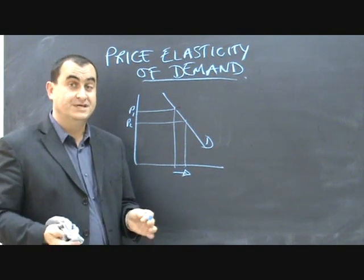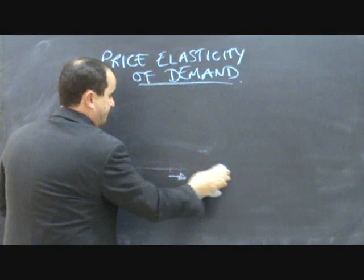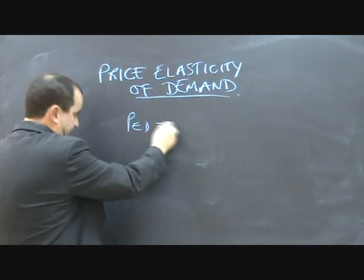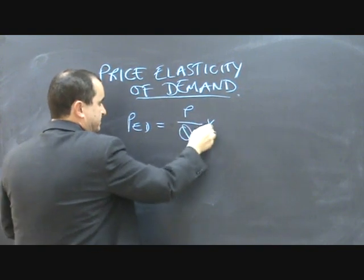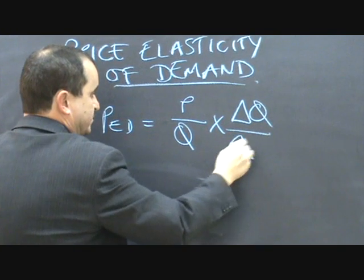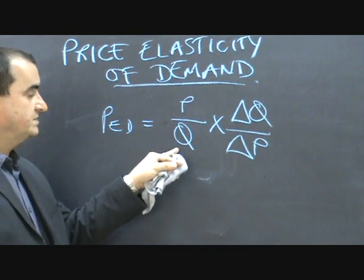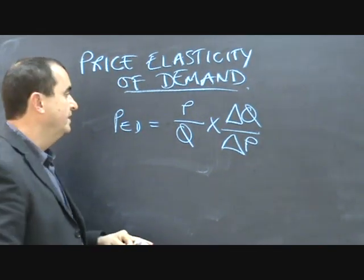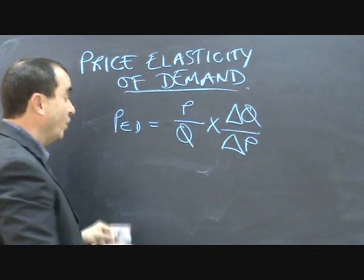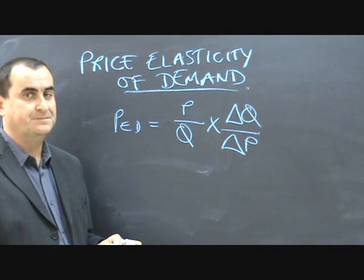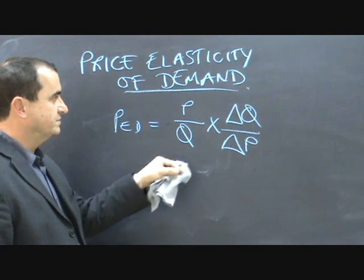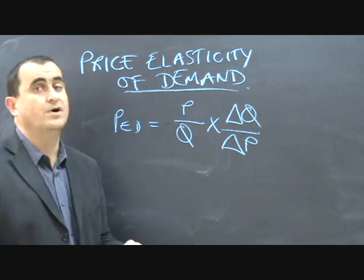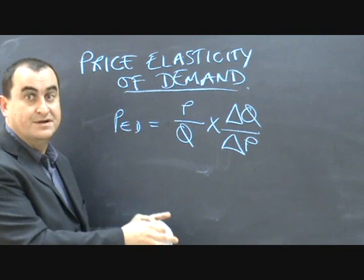There are two equations you can use. The first equation is: PED = P/Q × ΔQ/ΔP, where price and quantity are the original price and quantity — the starting price and quantity from which price changes. This will always give a negative value, because if price rises quantity falls, so you get a positive over a negative or a negative over a positive. I'm going to ignore negative values and just treat the number from now on.